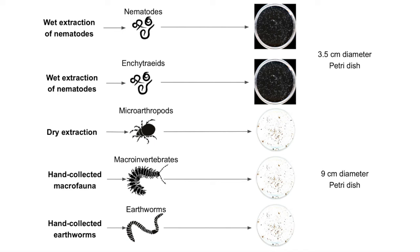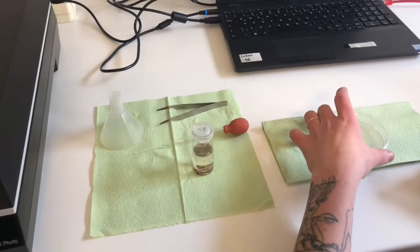We use 3.5 cm plastic petri dish for nematodes and enchytraeids, and 9 cm plastic petri dish for other groups. In this video, an example of imaging of microarthropods including small macrofauna is shown.